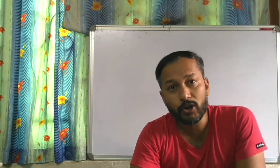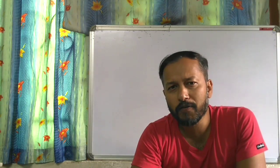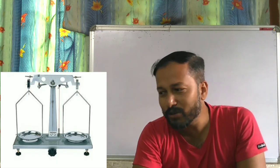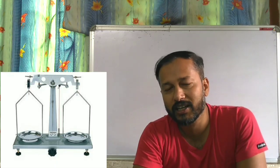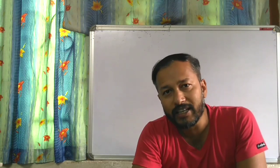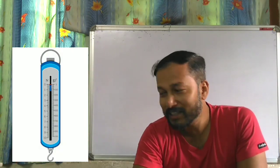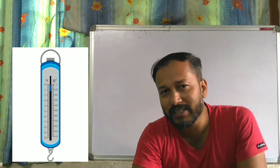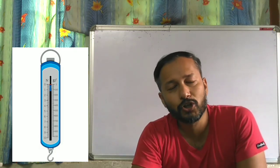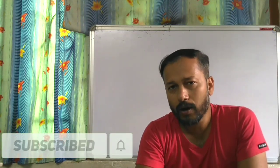Now, by what device do we measure the mass of an object? We require a physical balance. See the photo — a physical balance is used to measure mass. To measure the weight of an object, we use a spring balance. See the photo — a spring balance is used to measure weight. So to measure mass we use physical balance, and to measure weight we use spring balance.